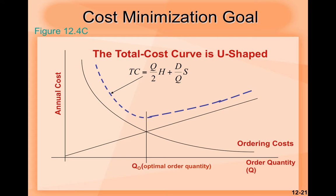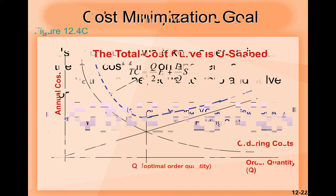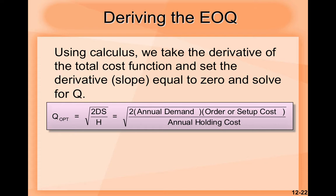We have the cost minimization goal shown in a graph. We can see our previous formula put into action. Deriving the EOQ: using calculus, we take the derivative of the total cost function and set the derivative — which means the slope — equal to zero and solve for Q. We have another formula: Q-optimal equals the square root of two times annual demand times order or setup cost, all divided by the annual holding cost.